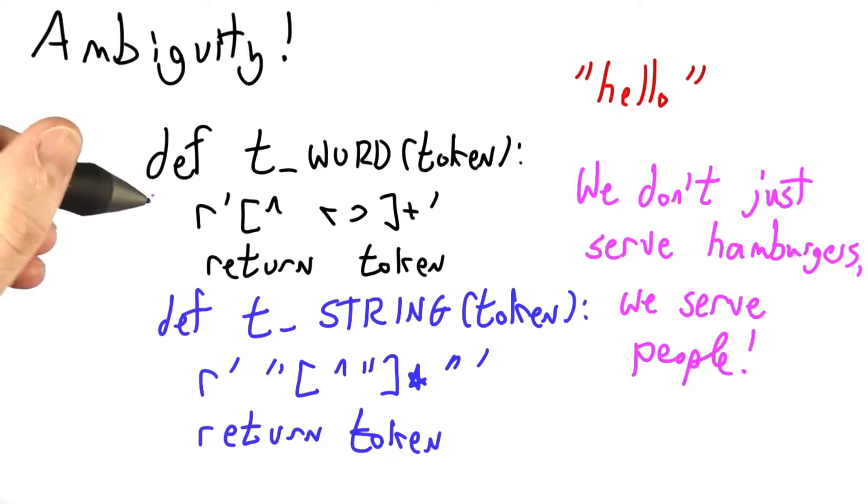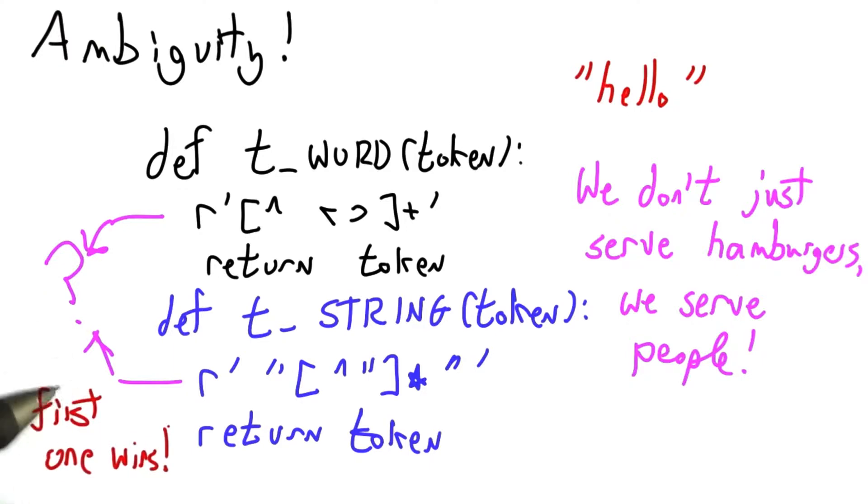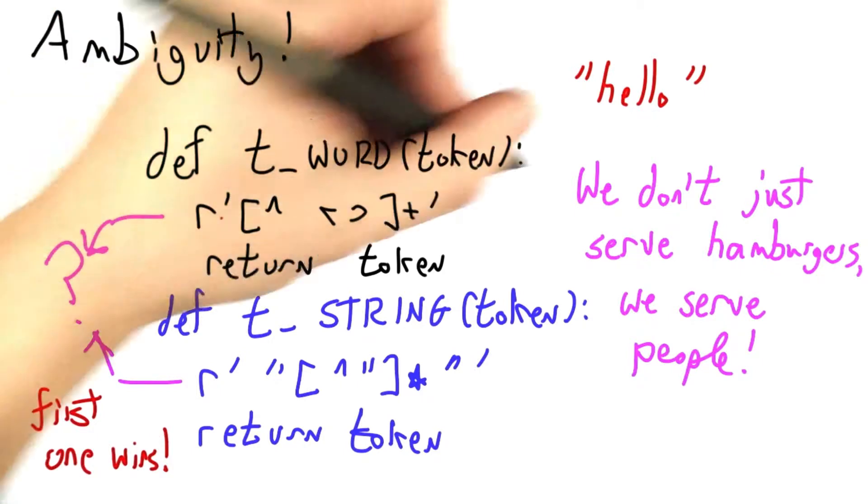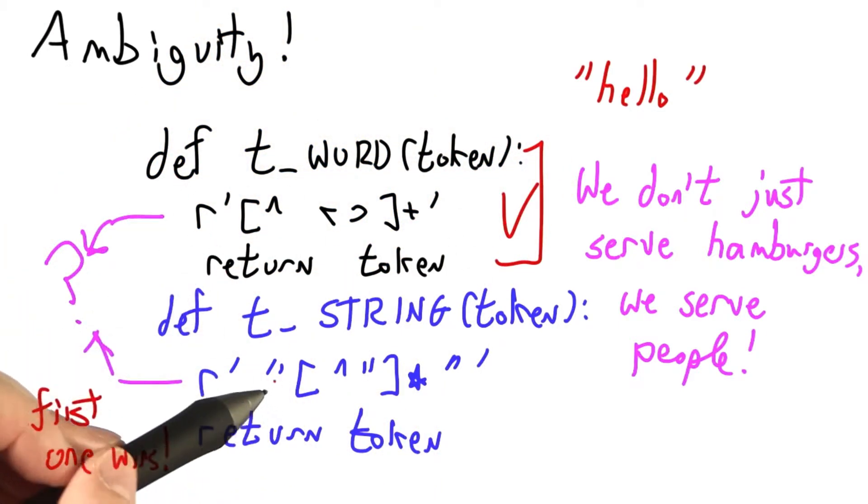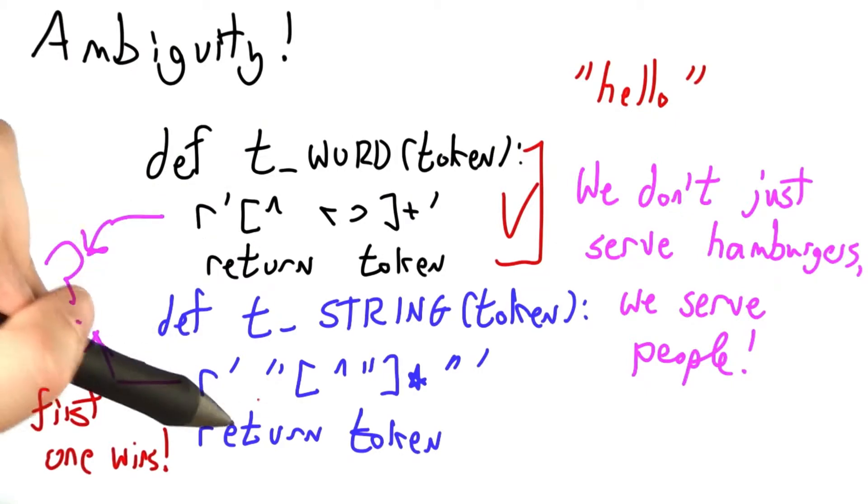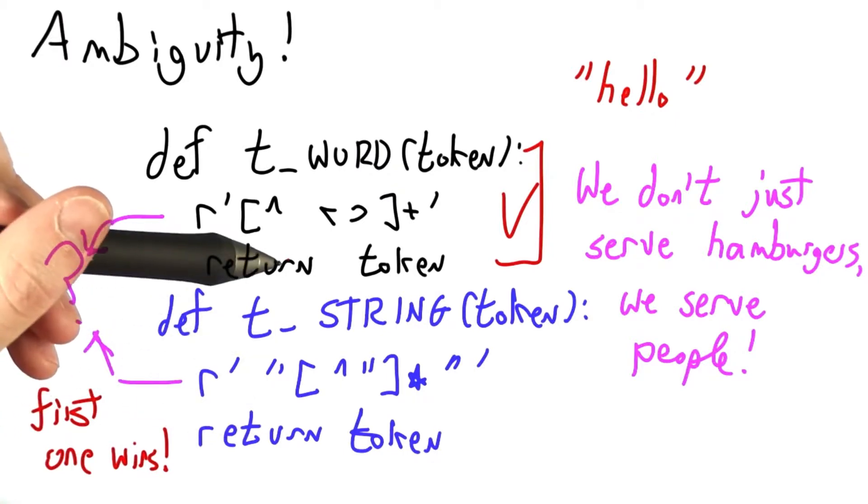So we want to have definitive rules for figuring out which of these we prefer. In fact, we're going to use a very simple rule. The first one you list wins, the one closer to the top of the file. So this is our big winner and is going to take priority over string. So if you're making a lexical analyzer for HTML or JavaScript, ordering your token definitions is of prime importance.